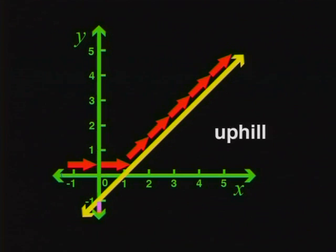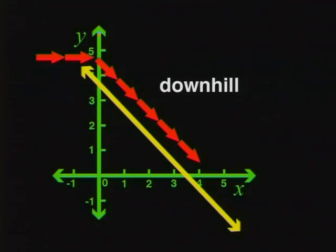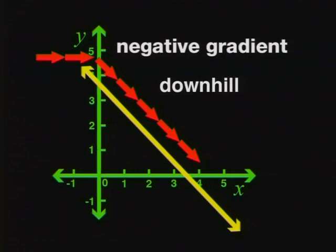In the Cartesian plane, a slope is uphill when the y values increase as the x values increase. In other words, as x gets bigger, y also gets bigger. This will be the same as going uphill from the left to the right. The slope of an uphill is positive. A slope is downhill when the y values decrease as the x values increase. The gradient of a downhill is negative. This is an important thing to remember: an uphill has a positive gradient and a downhill has a negative gradient.